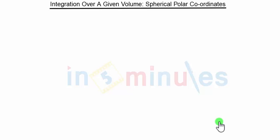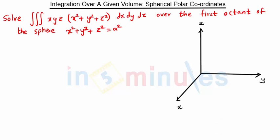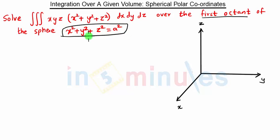Hello everyone, welcome to 'In 5 Minutes.' In this video we are going to see the problem on integration over a given volume using spherical polar coordinates. The question is: solve the integration over the first octant of the sphere x² + y² + z² = a².